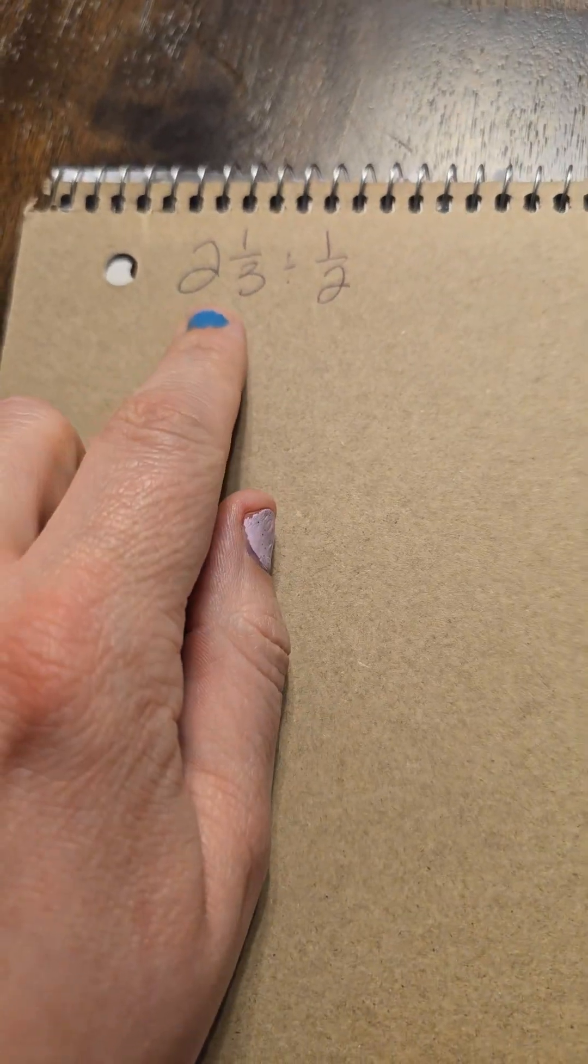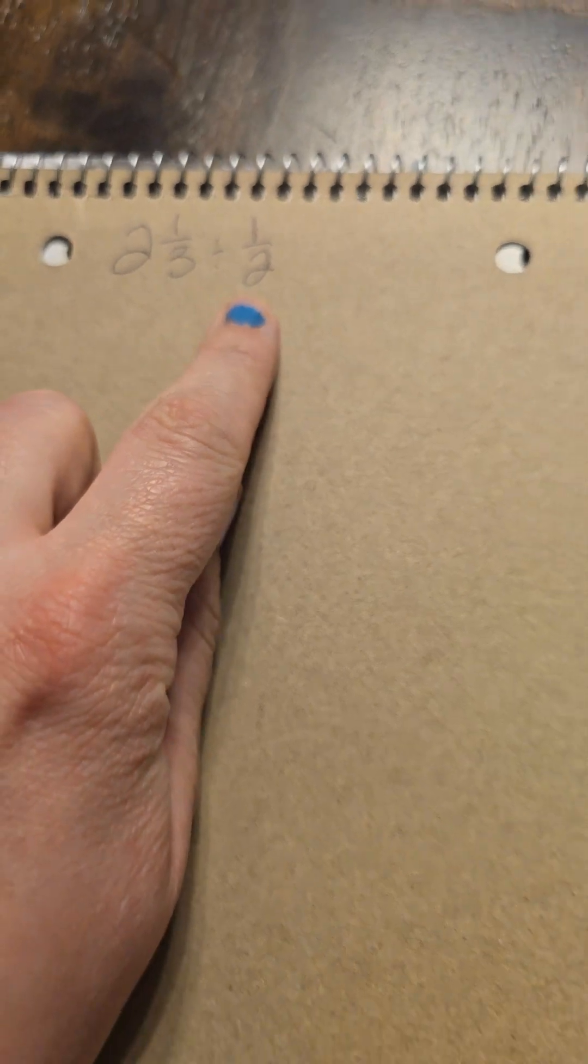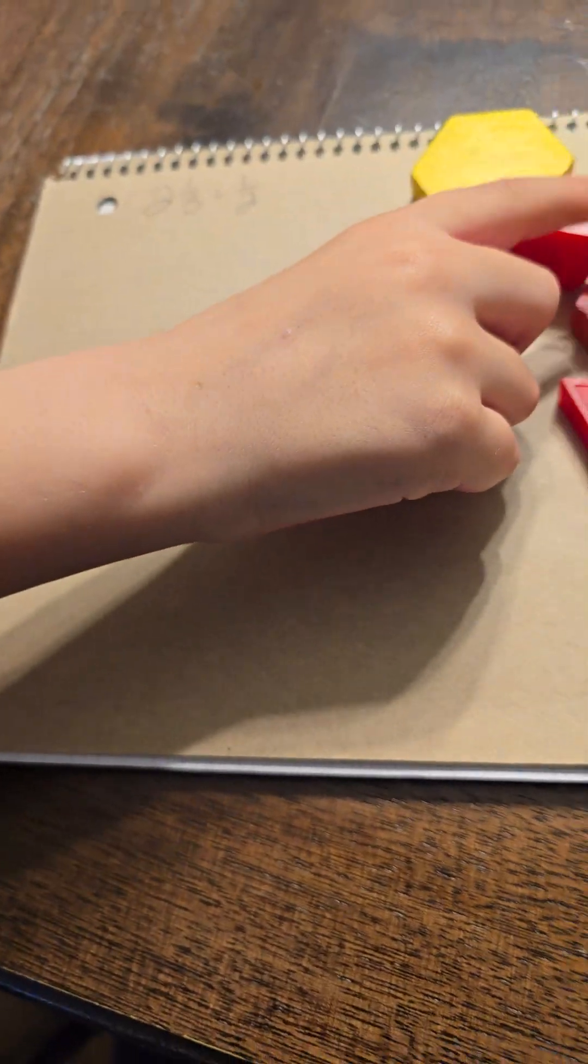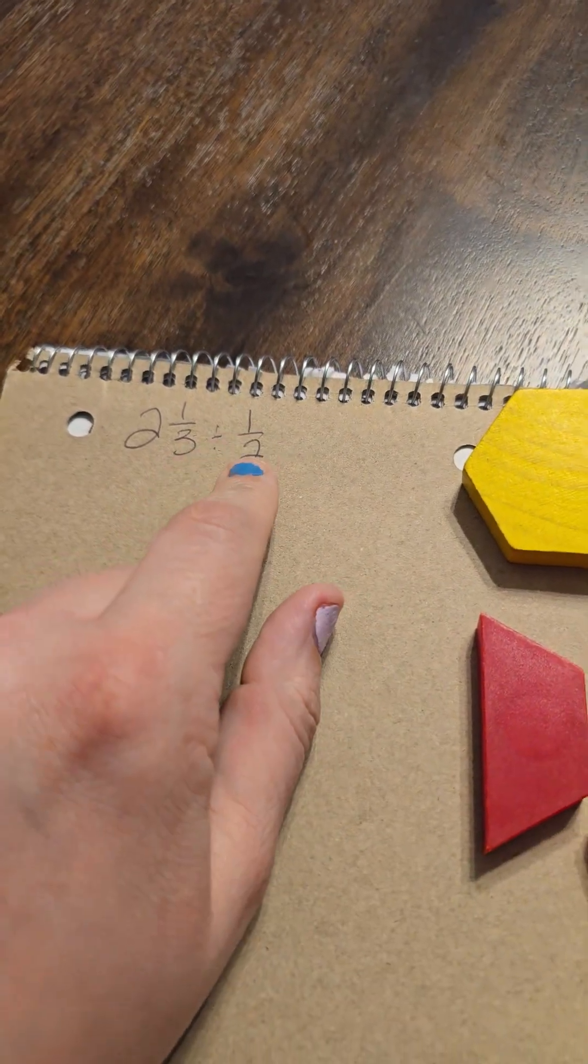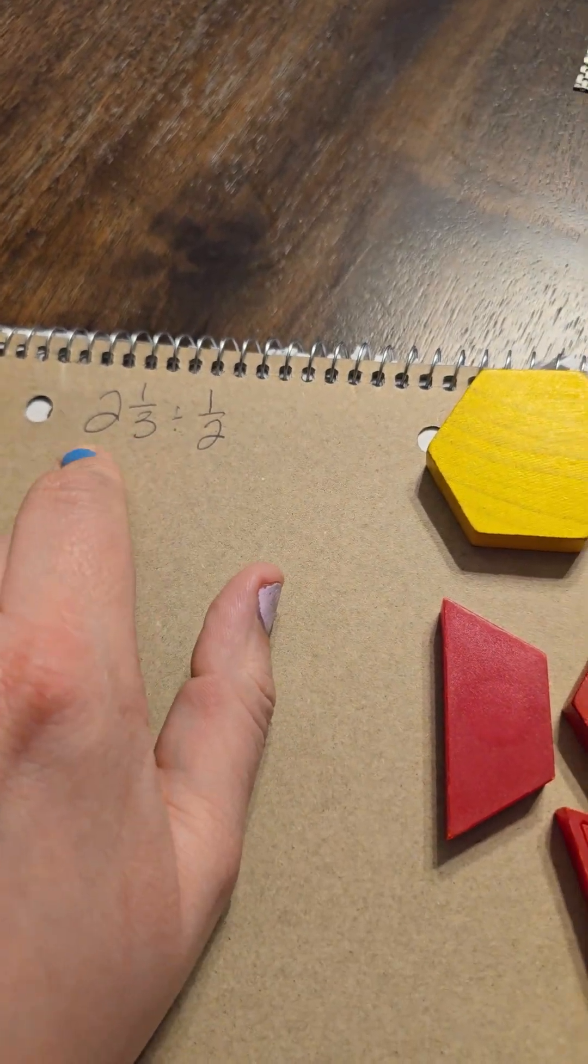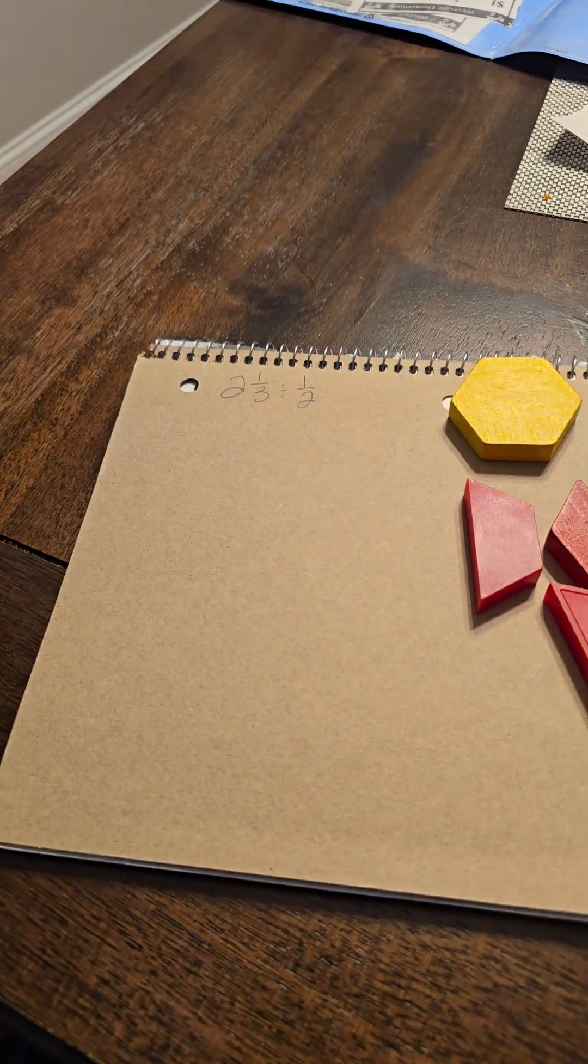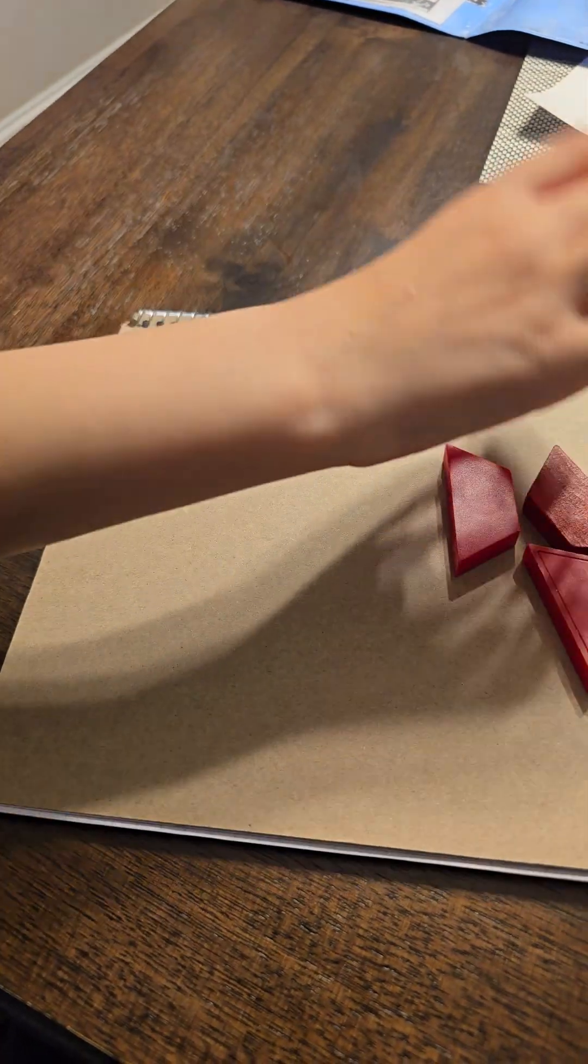So now we're going to do the problem two and one-third divided by one-half. We're going to use these fun little blocks. So we need to make a key. What's a key? I see a half, I see a third, we're going to need some wholes. What color should we use for a whole? These yellow hexagons.